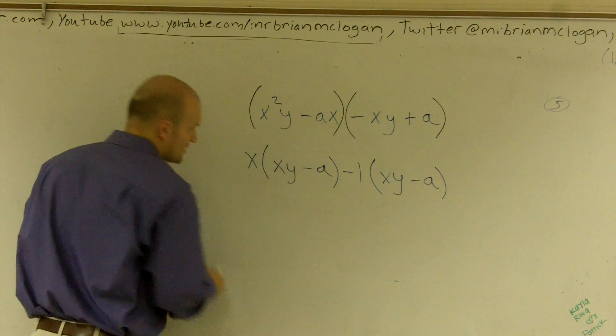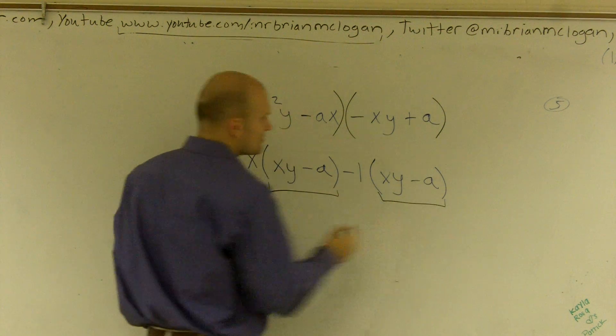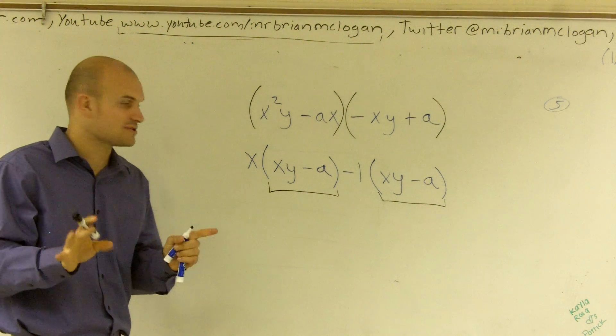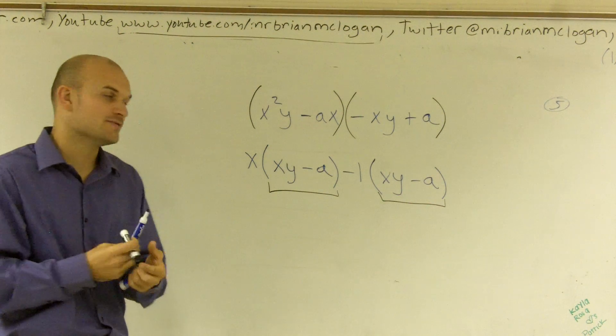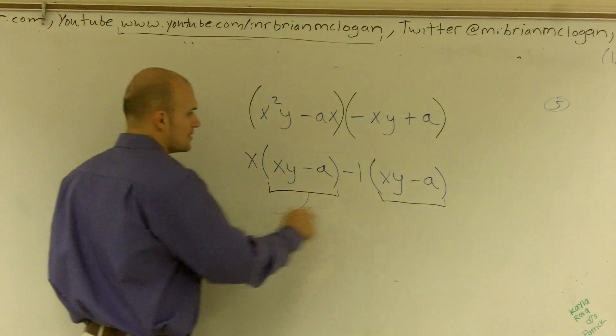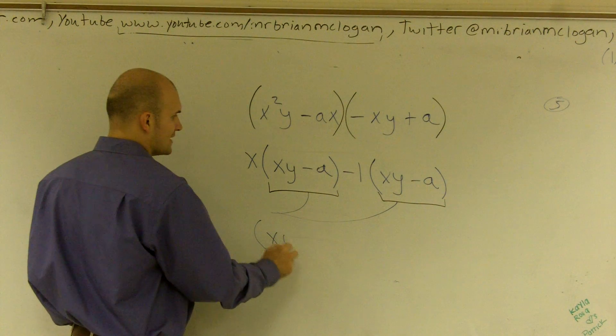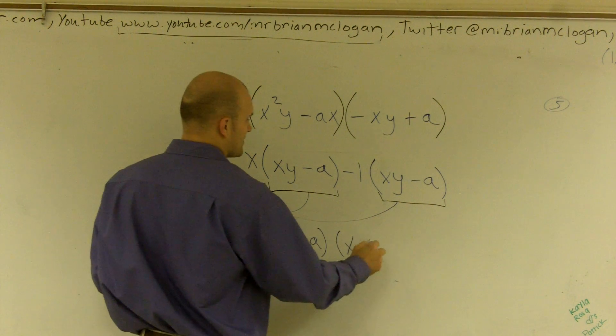So therefore, what you have noticed is you guys have now created two terms that are exactly the same. Yes, I know they're binomials - they're not numbers themselves - but they are exactly the same. So therefore, what I can do now is factor both of these out. So if I factor these both out, I get (xy - a) times (x - 1).